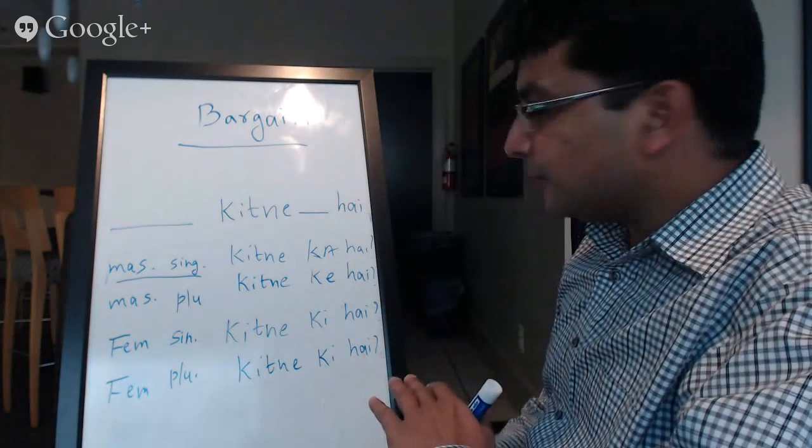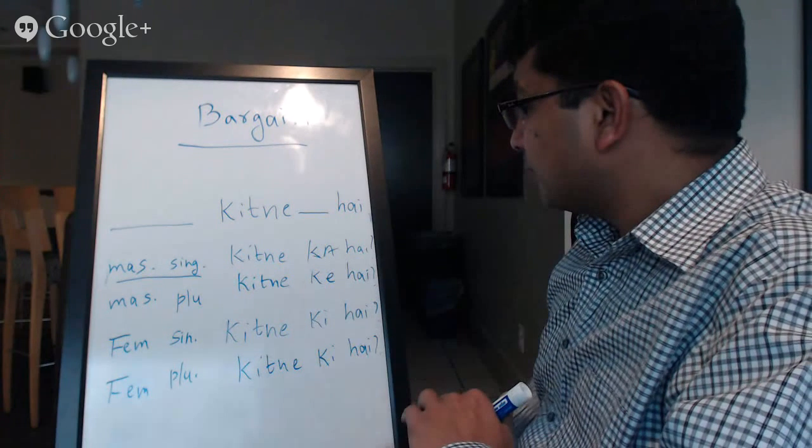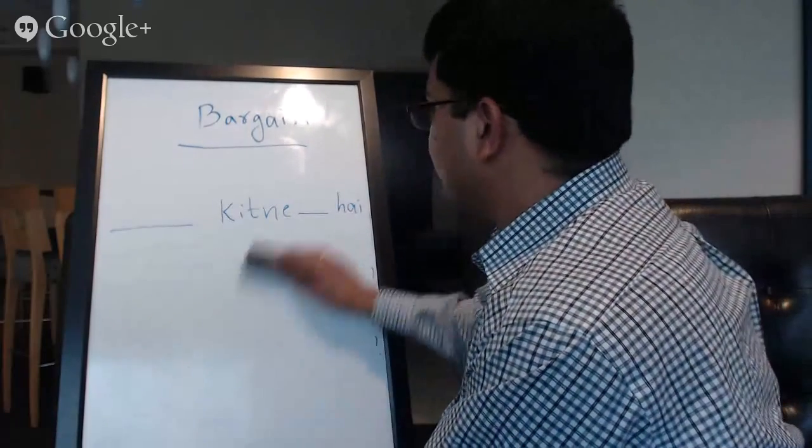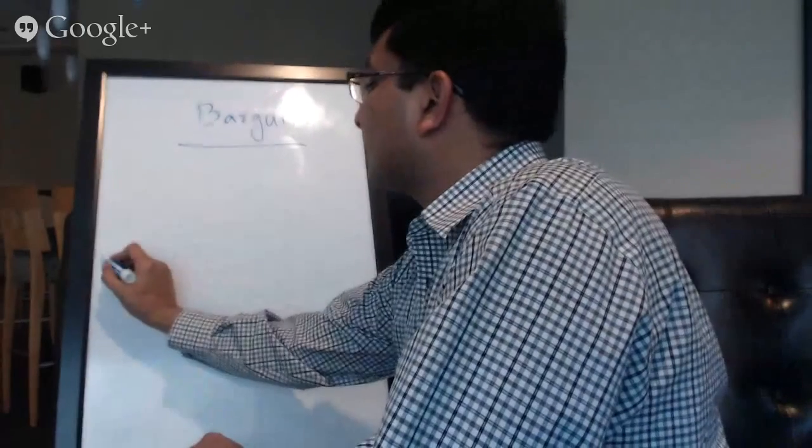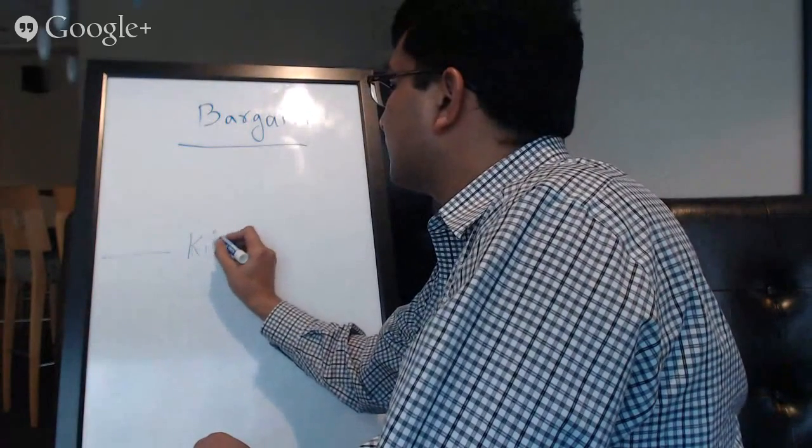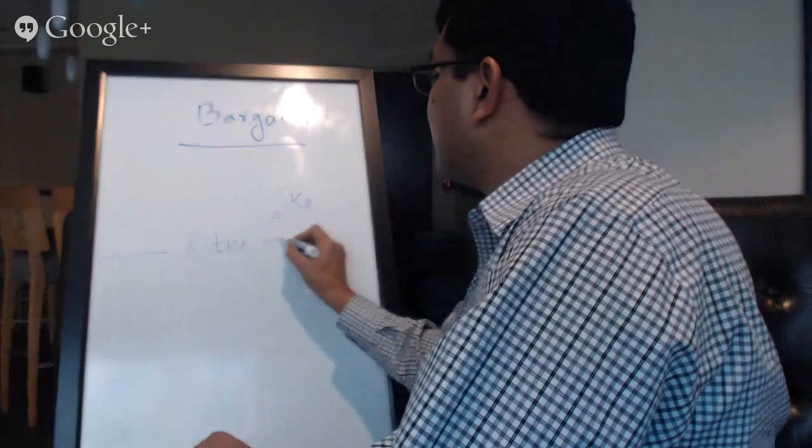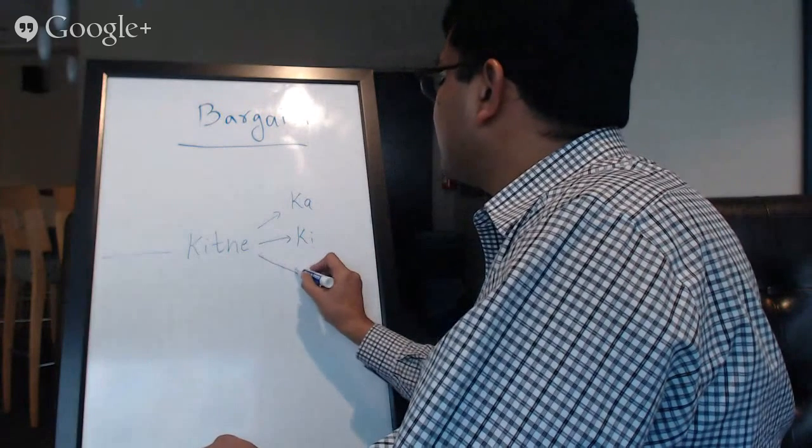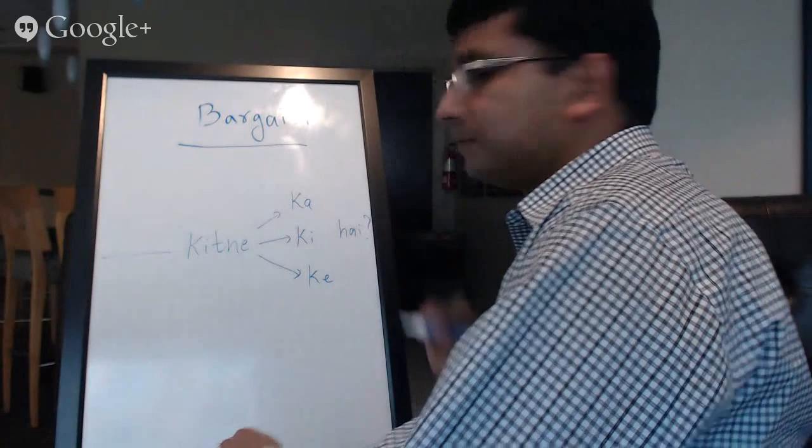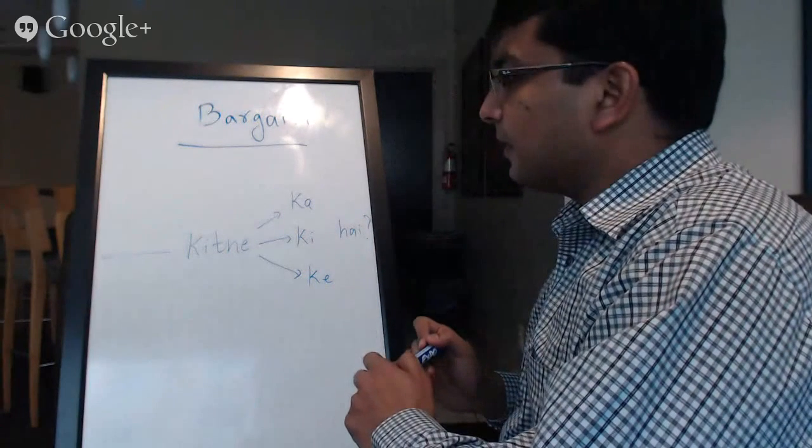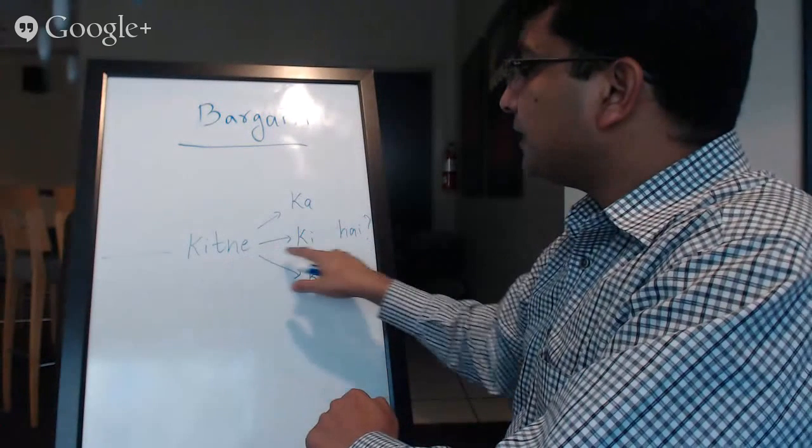I hope everybody have gone through these different variations. I'll write down in a much more simpler way now. It's name, it could be kitne ka, kitne ki, and kitne ke, followed by hai. So you'll write down your object here. And you'll say, kitne ka hai, kitne ki hai, and kitne ke hai.